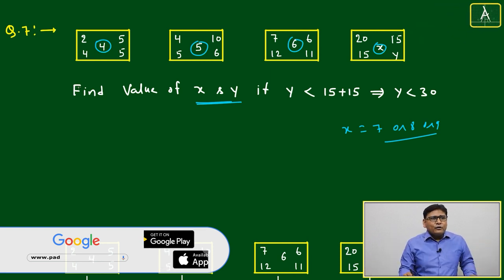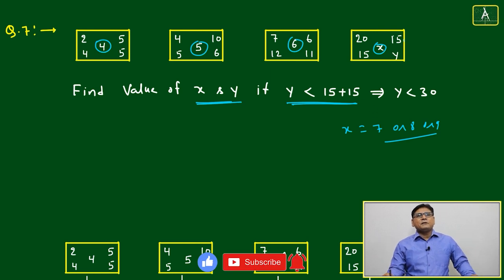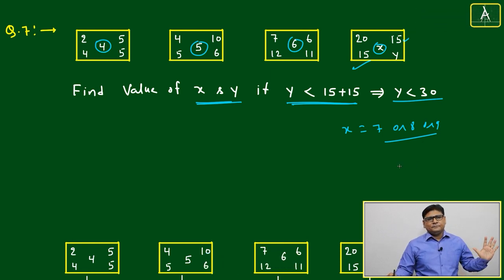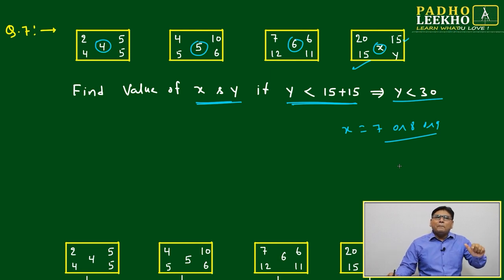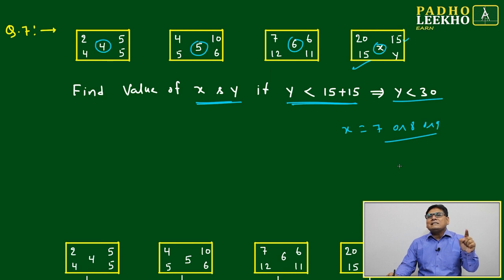Find the value of x and y if y is less than 15 plus 15. This means y must be less than 30, so the maximum you can put for y is 30. Which value of y will satisfy the given condition or pattern of this question?